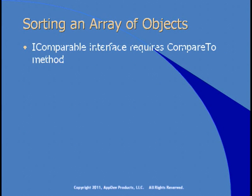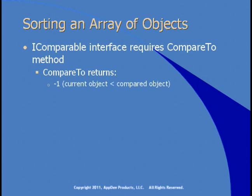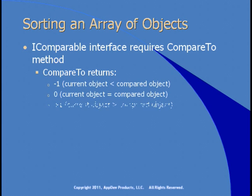Now, if you do implement the IComparable interface, you'll have a CompareTo method. The CompareTo method has to compare the existing item to one that's passed in as a parameter. Your method has to return minus one if the current object is less than the object you're comparing to, zero if the two are equal, or plus one if your object is greater than the one you're comparing to. Your code is the only one that can make this decision.